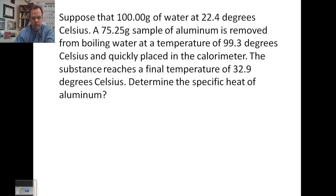So in this case, the negative Q of the metal is going to be equal to the positive Q of the water. So negative the mass of the metal, 75.25, specific heat of the metal which we're trying to find, change in temperature of the metal. So final 32.9 minus initial 99.3.